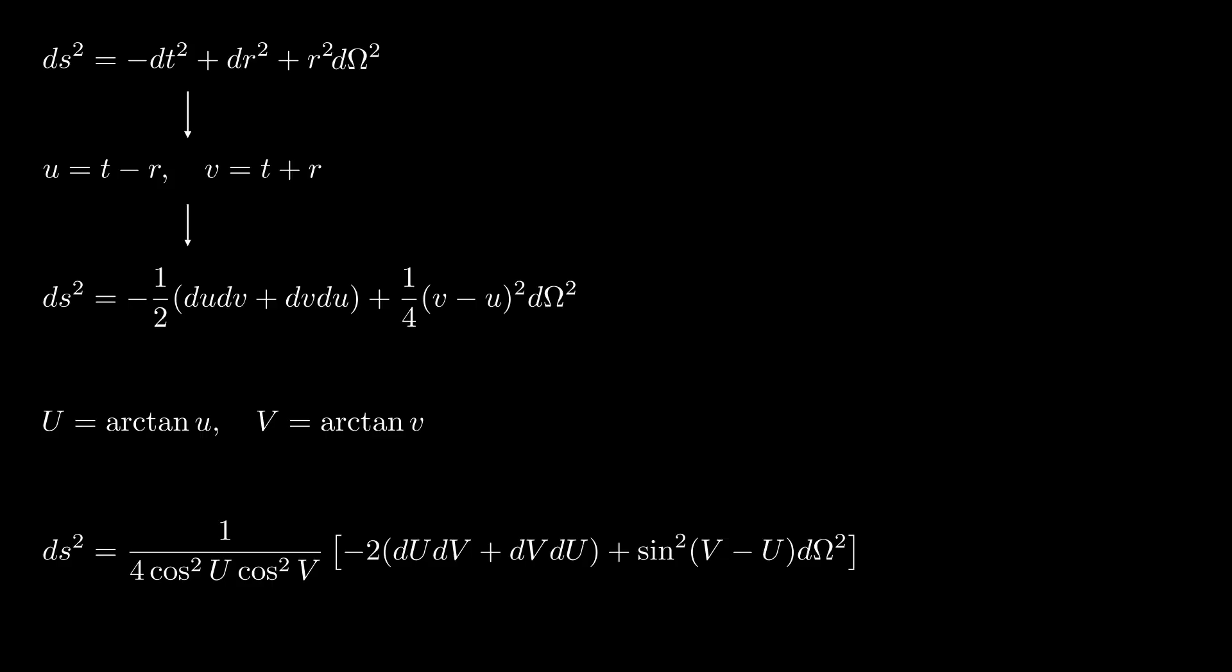Remember that arctan allowed us to compact our range into a finite interval. With this metric now in terms of capital U and V, we have ranges that are finite, but our light cone is still in the same orientation as was shown. We must change coordinates once again to get the light cone back to its upright position.